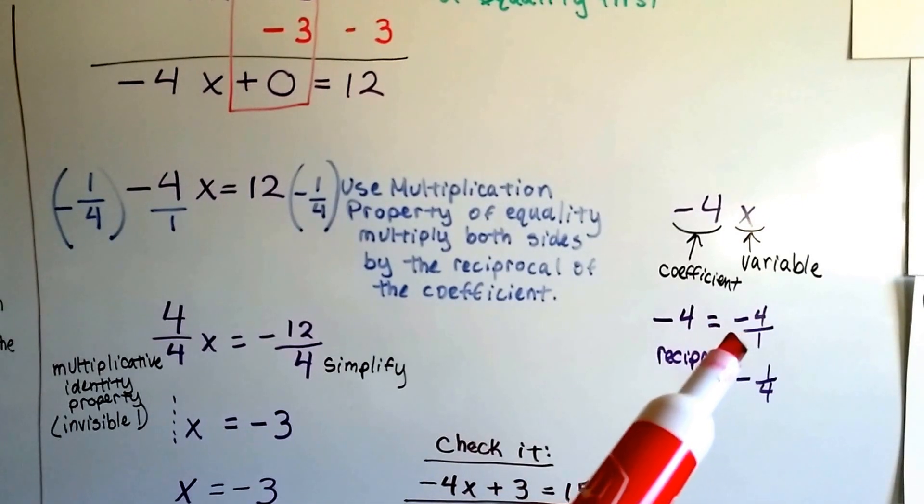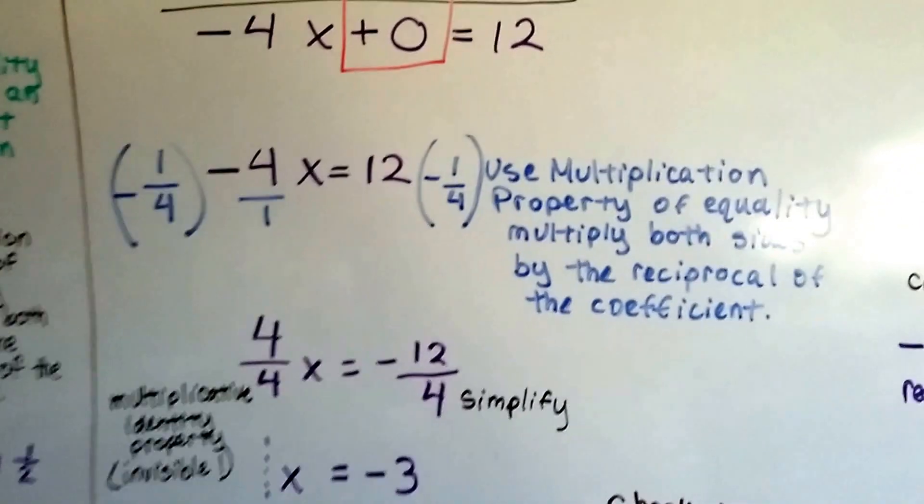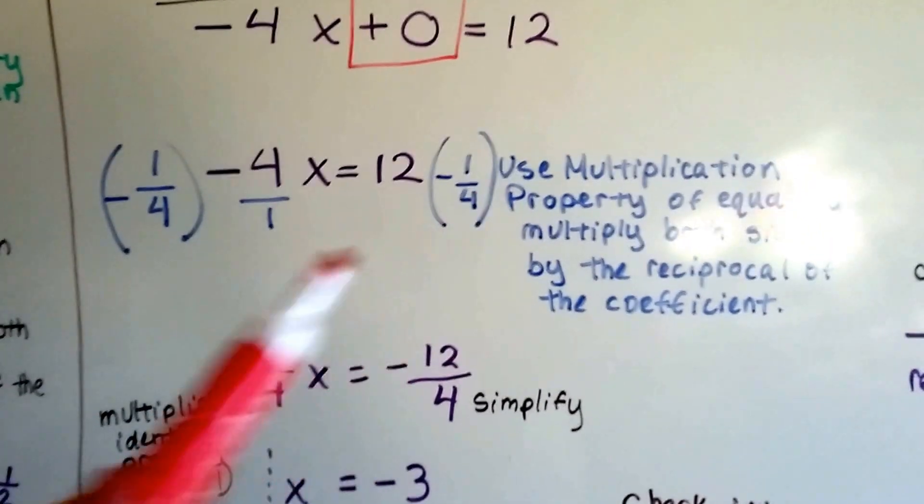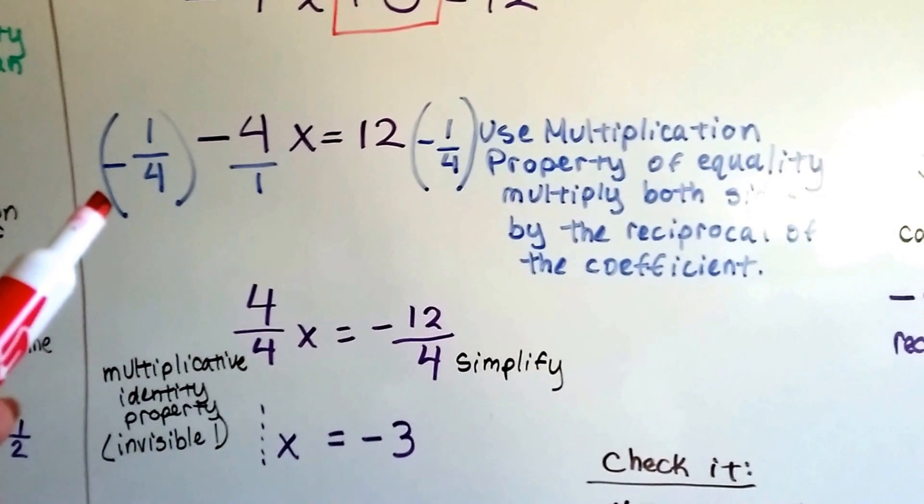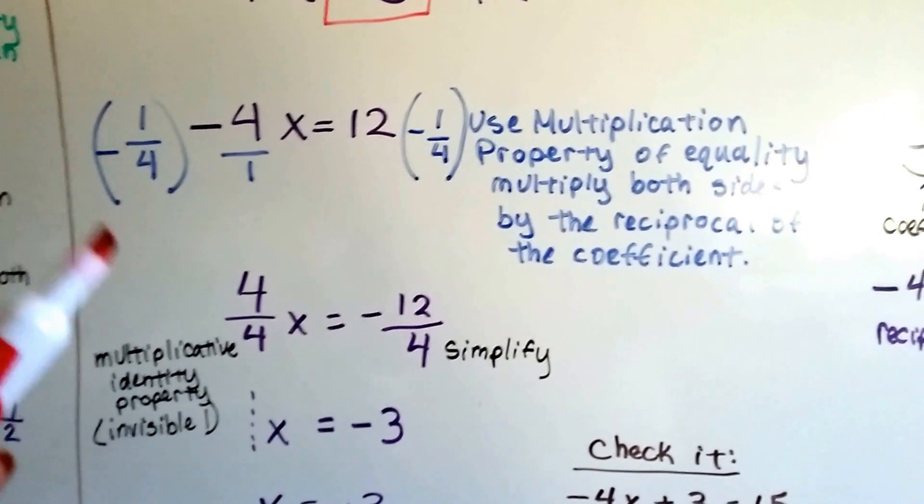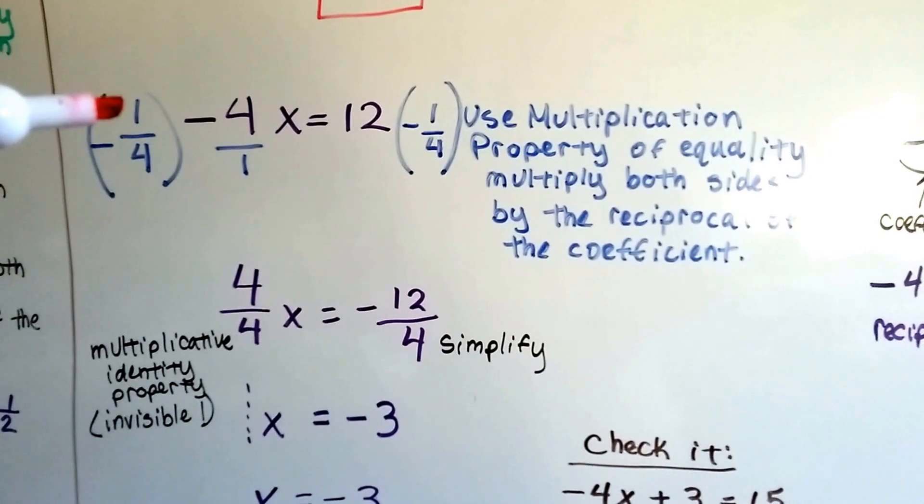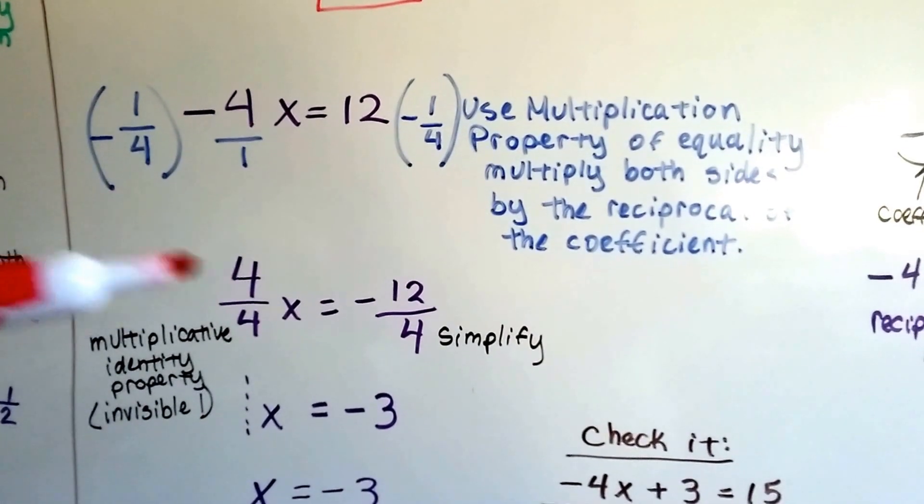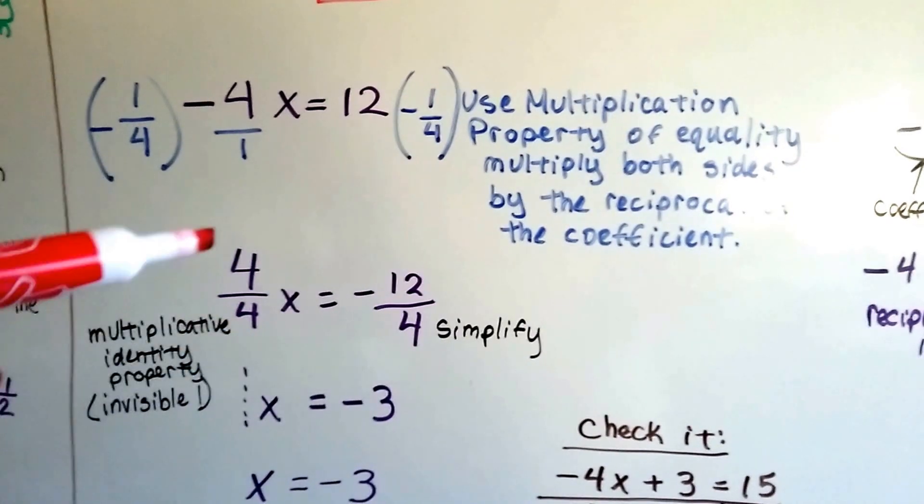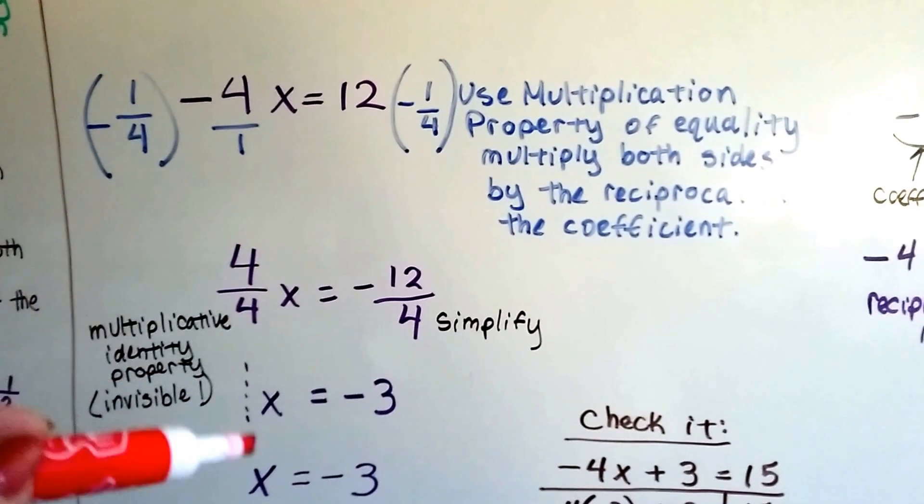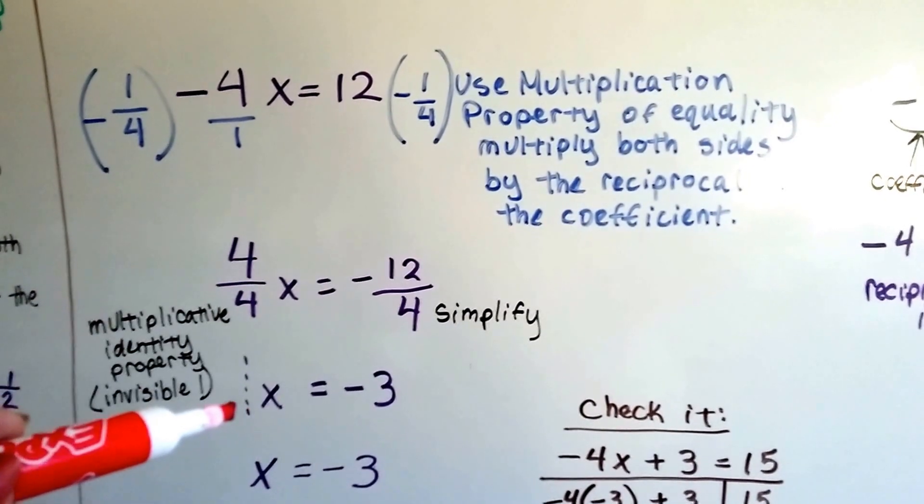Being a reciprocal has nothing to do with positive or negative. It still keeps the sign that it had. So negative 4 as negative 4 over 1 is going to be negative 1 fourth. It stays negative. So now I'm going to multiply both sides of the equation by negative 1 fourth. You remember what happens when we multiply a negative to a negative? It makes a positive. So we've got negative 1 times negative 4 is a positive 4. And a negative 4 times a negative 1 is a positive 4. So we've got 4 over 4 again.